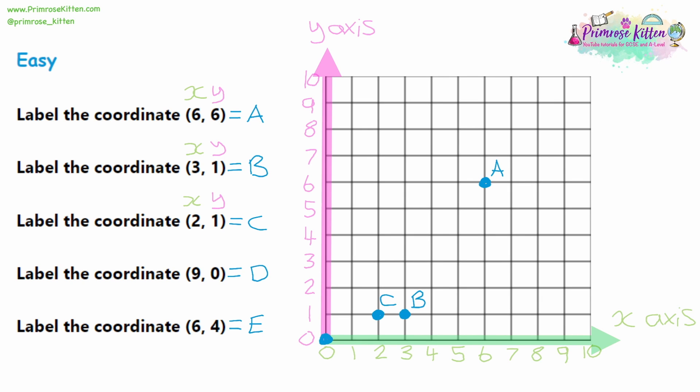Question 4: the coordinate is (9, 0) — 9 for the x-axis and 0 for the y-axis. So we go along 9 and up 0. You can have answers that are exactly on the axes, and these will always have a 0 as one of the coordinates. If you have a 0 for the y-axis, you're actually on the x-axis — which might be the opposite way around to what you expect. That's D — you can see the green 9 and the pink 0 right on the axis.